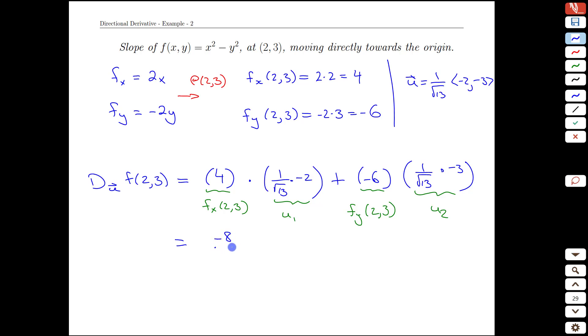We end up with -8/√13 and then plus 18/√13. That's 10/√13, or approximately 2.77.